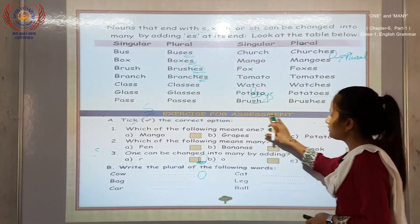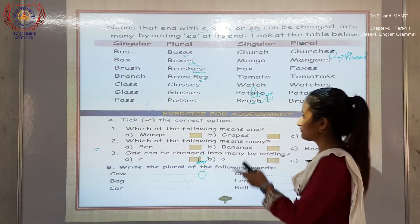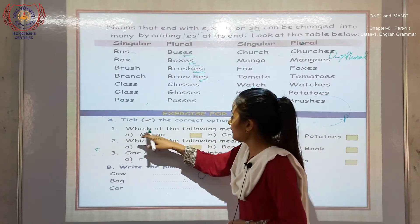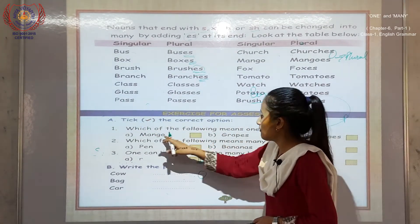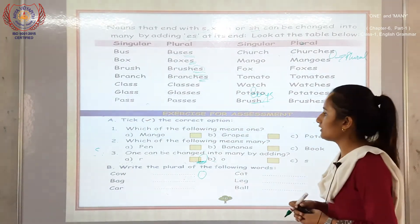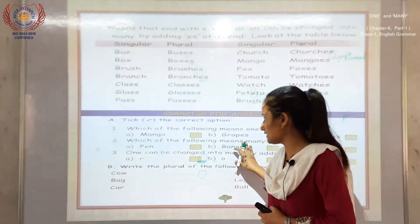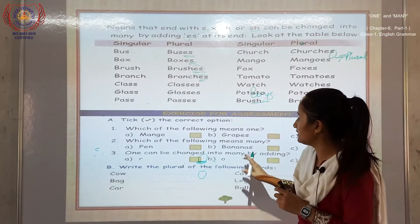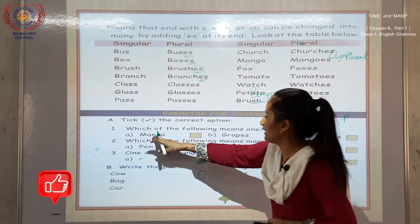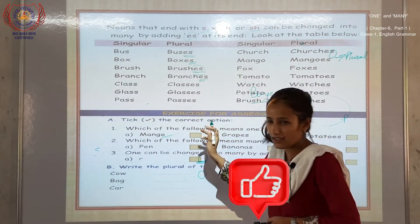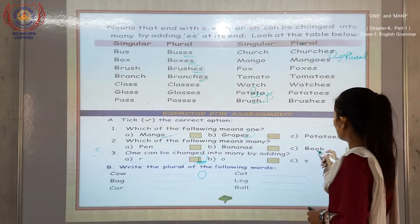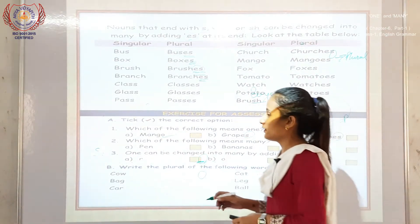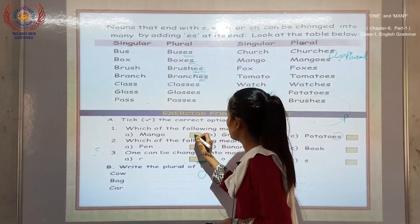Next, you can see the exercise. Tick the correct option. Which of the following means one? — nyaan pe chho hai kaunsa answer. We have to find the singular name. Mango — M-A-N-G-O — there is no S or E-S. G-R-A-P-E-S has S, so it is plural. P-O-T-A-T-O-E-S is also plural. So mango is the singular answer.